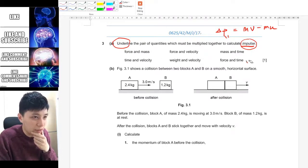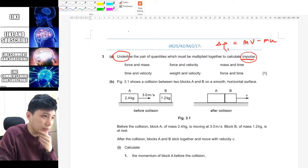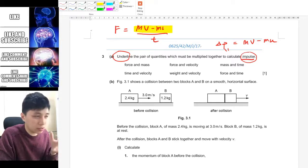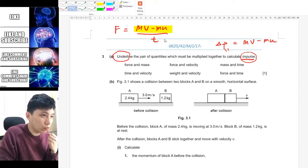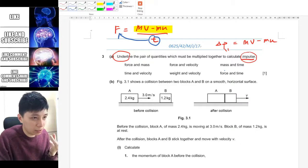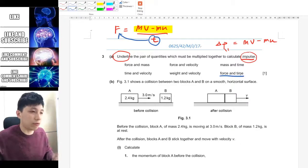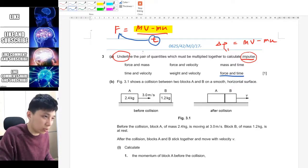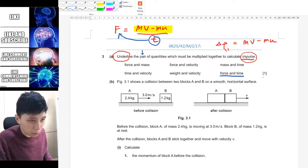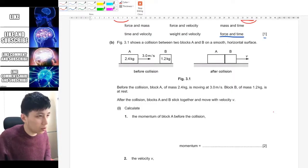But you have to read the questions carefully. Remember there was an equation that is F equals to mv minus mu over t, and then you could rearrange it so that it will be force times time. So this is the one that we want, and it asks for the pair. There's no s so obviously there's only one pair. Also supported by the fact that there's only one mark.